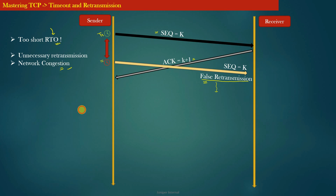Computing the accurate value of retransmission timeout is very important for TCP. Computing the value of RTO too long or too short both have their own set of problems.